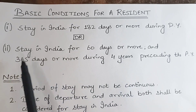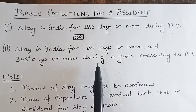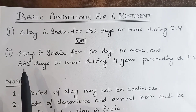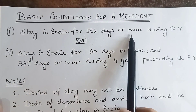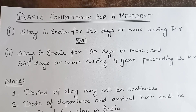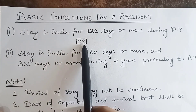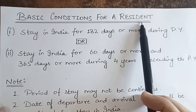What is the second condition? In the previous year, a person should be present in India for at least 60 days, and he should have been present for 365 days or more during the 4 years preceding the previous year. If this condition is fulfilled, there is no further condition needed — the individual will be considered a resident of India.